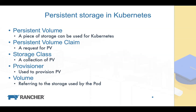The most common concept you may have heard about is Persistent Volume and Persistent Volume Claim. In short, a Persistent Volume (PV) is a piece of storage that can be used by a Kubernetes pod, and a Persistent Volume Claim (PVC) is a request for a Persistent Volume.